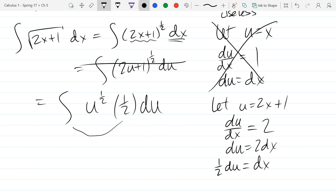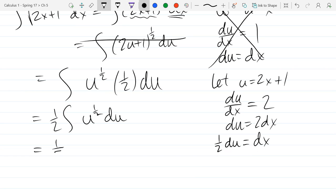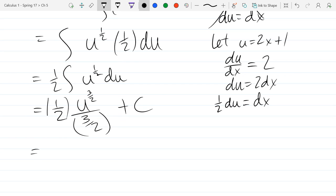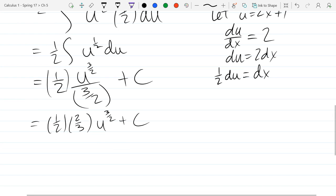Constant multiple rule says that I can move the multiply by a half to the front of the integral. What is the anti-derivative of u to the half power? Add one to the power, divide by that new power. Now we do have a multi-story fraction so let's fix that. We're going to multiply by the reciprocal here. One half times two thirds is one third.